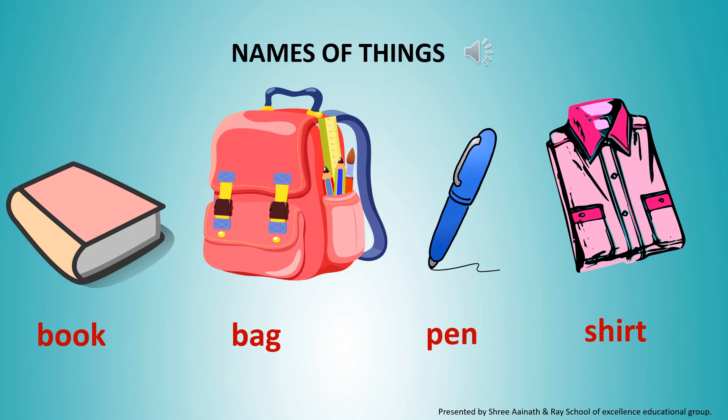Book, bag, pen, shirt — all these are names of things. Pencil, bottle, table, chair — these are names of things.